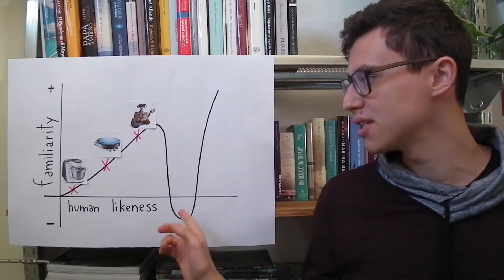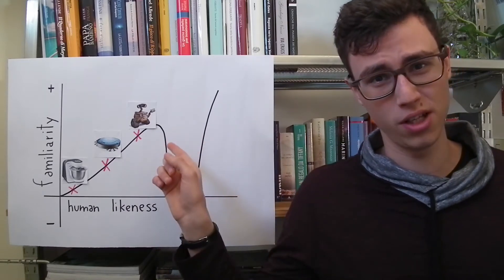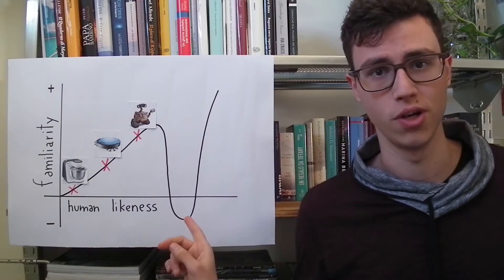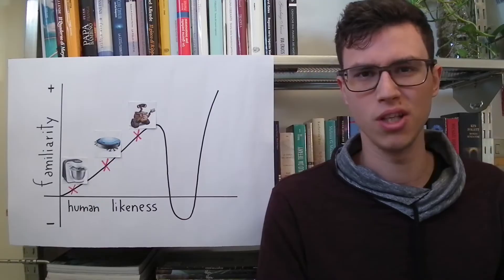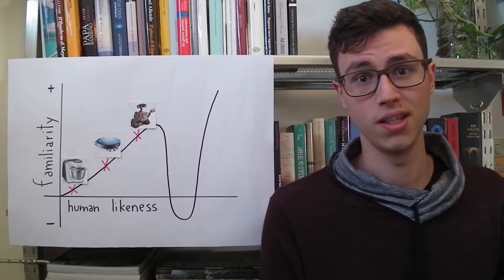Falling in this valley means that we no more have affection and familiarity for the robot, but we have repulsion for it. We can think about a humanoid android with synthetic hair and skin, or we can think about the example of a professor that in recent years created a robotic copy of himself. We can still tell that the robot is a robot, even if it's pretty similar to the professor, and this thing is creepy.